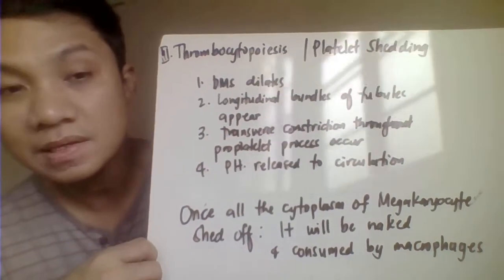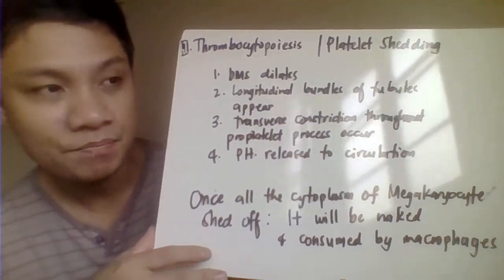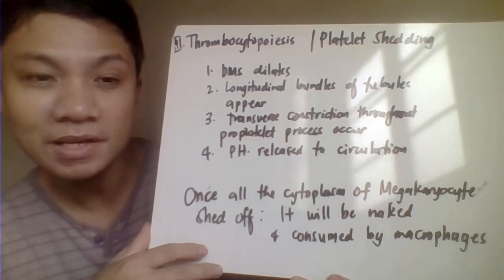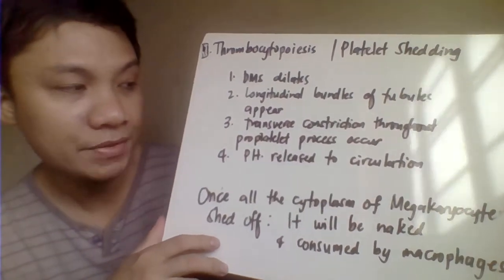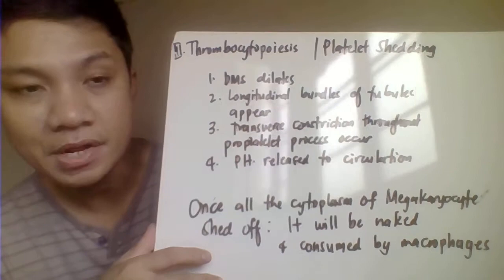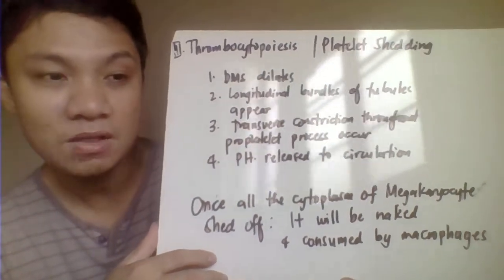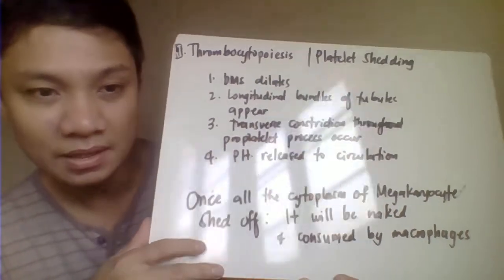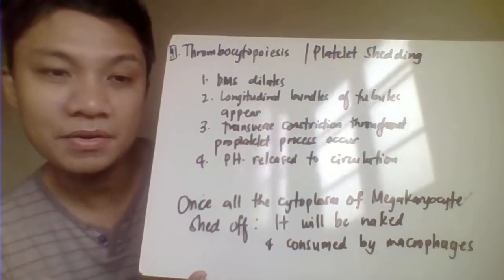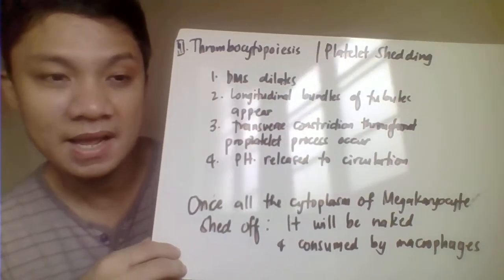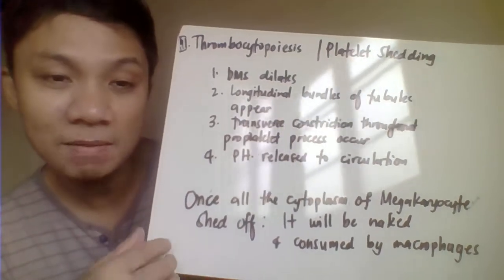First, we have your demarcation system dilates. We have also your longitudinal tubules, bundles of tubules trying to form. And we have also your transverse constriction throughout your platelet process trying to produce. And eventually, each of your cytoplasm of your megakaryocyte tries to be shed off as individual platelets.